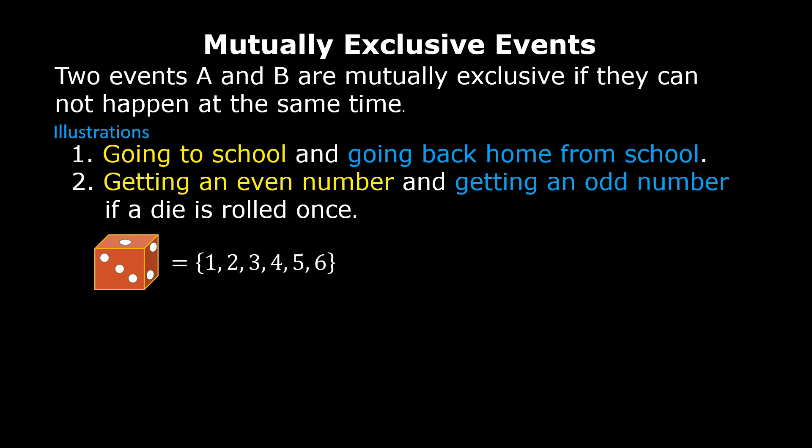The first event in the second illustration is getting an even number. Let us represent this by A. The possible outcomes in event A are two, four, and six.